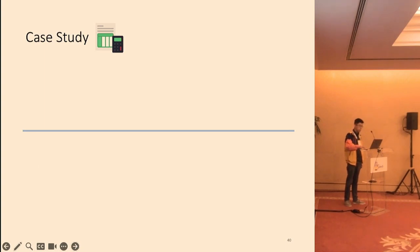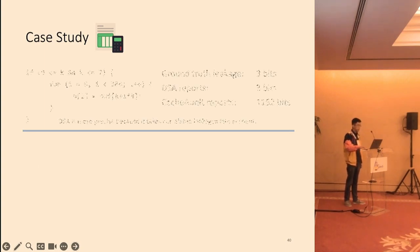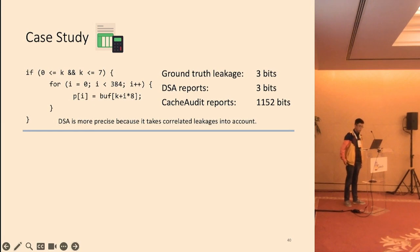Let's do some case study. First, on the quantification task. In this program, K, the secret, is used to index into an array buff. However, even though the array is accessed in every iteration, the same K is used. Therefore, the program only leaks three bits, as K ranges from 0 to 7. However, CacheAudit is not able to reason about correlated leakage like this, so it overestimates.